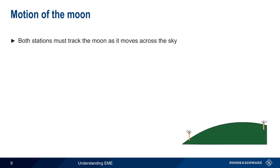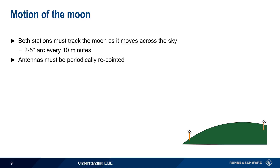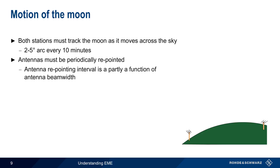Since the moon is also a moving target, both EME stations must track and point their antennas at the moon as it moves across the sky. As seen from the Earth, the moon moves through a 2 to 5 degree arc approximately every 10 minutes, so antennas must be periodically repointed to follow the moon, typically every 5 to 10 minutes. The antenna repointing interval — that is, how often the antenna must be repositioned — is also partly a function of the antenna beam width. An antenna with a narrower main beam will need to be repointed more often than an antenna with a wider beam width.